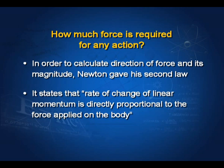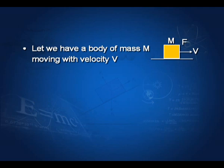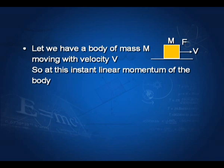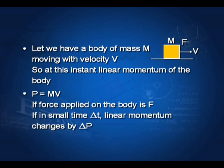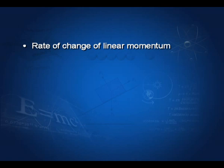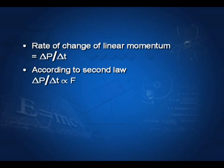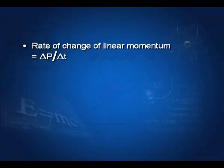The second law states that the rate of change of linear momentum is directly proportional to the force applied on the body. If a body of mass m is moving with velocity v, then at any instant its linear momentum is mv. If force f is applied on the body and in small time Δt the linear momentum changes by ΔP, then the rate of change of linear momentum equals ΔP/Δt. According to the second law, ΔP/Δt is directly proportional to f. Putting a coefficient of proportionality k, we get f = k·ΔP/Δt.